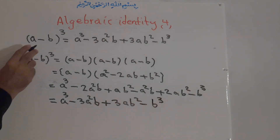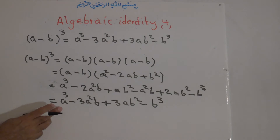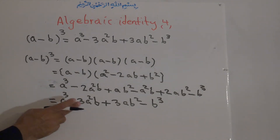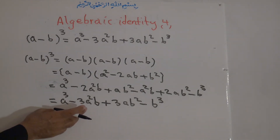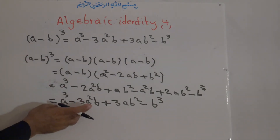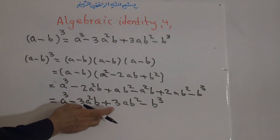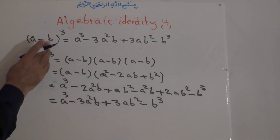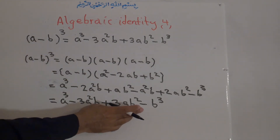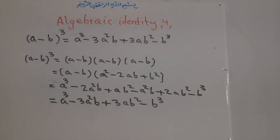And finally minus b cubed. So we find that (a minus b) cubed equals a cubed minus 3a squared b plus 3ab squared minus b cubed. That is: the first term cubed, minus 3 times the first term squared times the second term, plus 3 times the first term times the second term squared, minus the second term cubed.